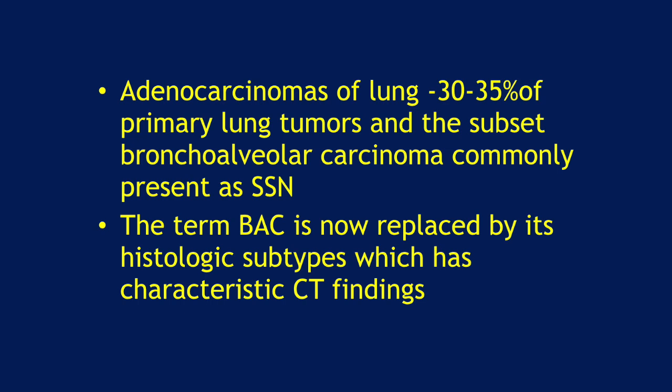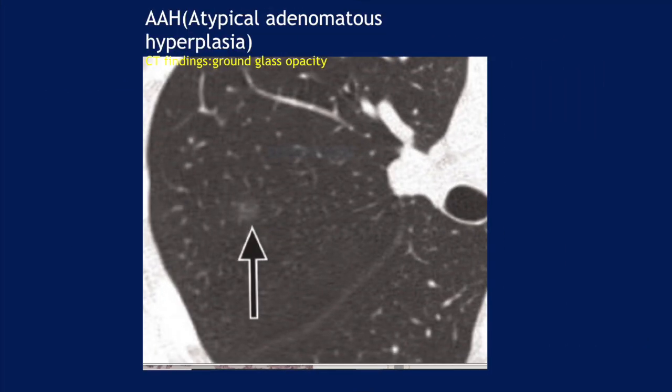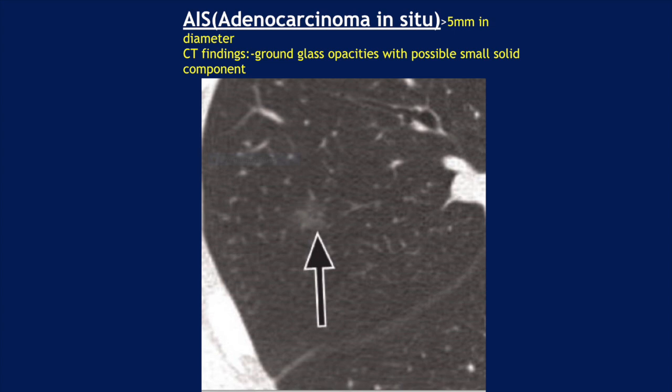The term bronchoalveolar carcinoma is now replaced by its histologic subtypes, which have characteristic CT findings. The subtypes are: AAH (atypical adenomatous hyperplasia), which appears on CT as ground glass opacity less than or equal to 0.5 centimeters; AIS (adenocarcinoma in situ), presenting as a ground glass nodule more than 5 millimeters in diameter, possibly with a small solid component.